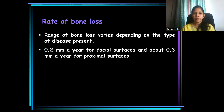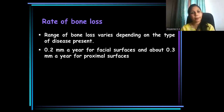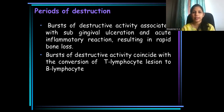In an area with untreated periodontal disease, the amount of bone loss that can occur on the facial surface and proximal surface is different. It has been found to be 0.2 mm for facial surfaces and 0.3 mm for the interproximal surfaces.